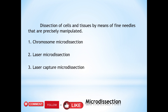Micro means small and dissection means to cut into smaller pieces. Micro dissection is the dissection of cells and tissue by means of fine needles that are precisely manipulated, or we can define it as dissecting cells or tissue under a microscope usually by free-hand manipulation of specific needles.